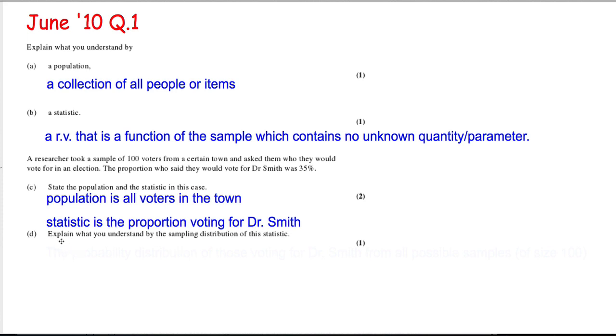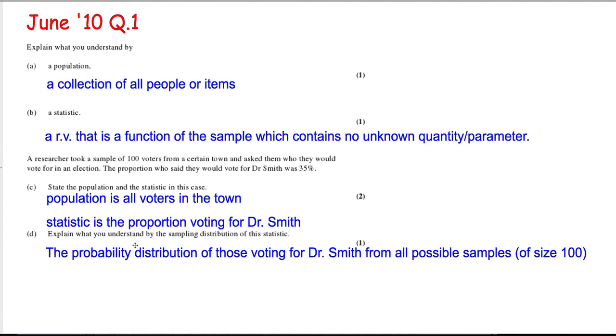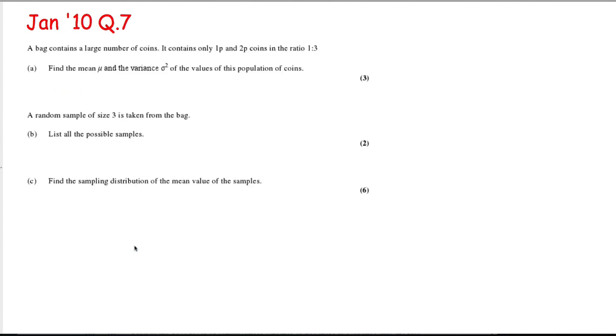Last part here, explain what you understand by the sampling distribution of the statistic. Well, this one's quite a complicated one. It's the probability distribution of those voting for Dr. Smith from all possible samples. We'll see an idea of what the sampling distribution is in the next question.